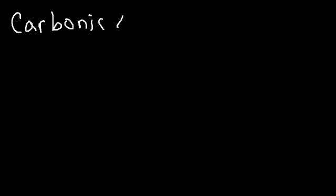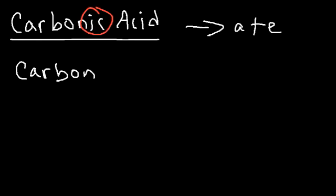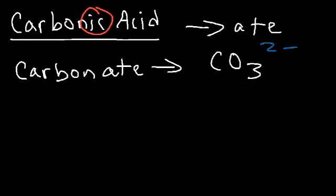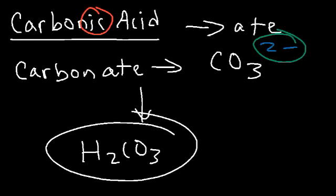What is the formula for carbonic acid? We don't have the prefix 'hydro-', so we know it's a polyatomic ion. And because we see the suffix '-ic', it's associated with '-ate'. The formula for carbonate is CO₃²⁻. We have a negative 2 charge, so we need to add 2 hydrogens. It's going to be H₂CO₃ — the formula for carbonic acid.